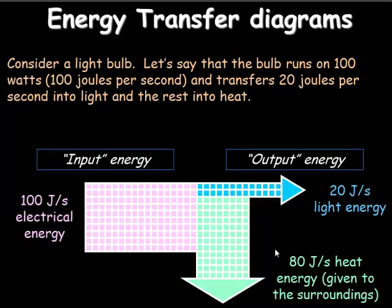Often this is used to calculate efficiency. Efficiency is output energy divided by input energy times 100 to give a percentage value. So 20 divided by 100 times 100 means that the efficiency of this light bulb is only 20%. That's how energy transfer can be shown diagrammatically.